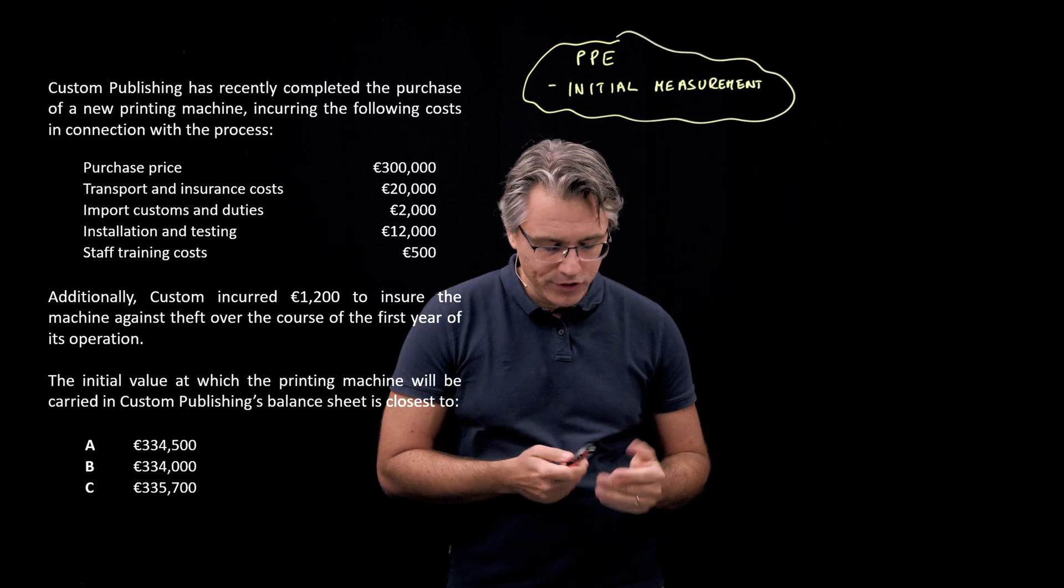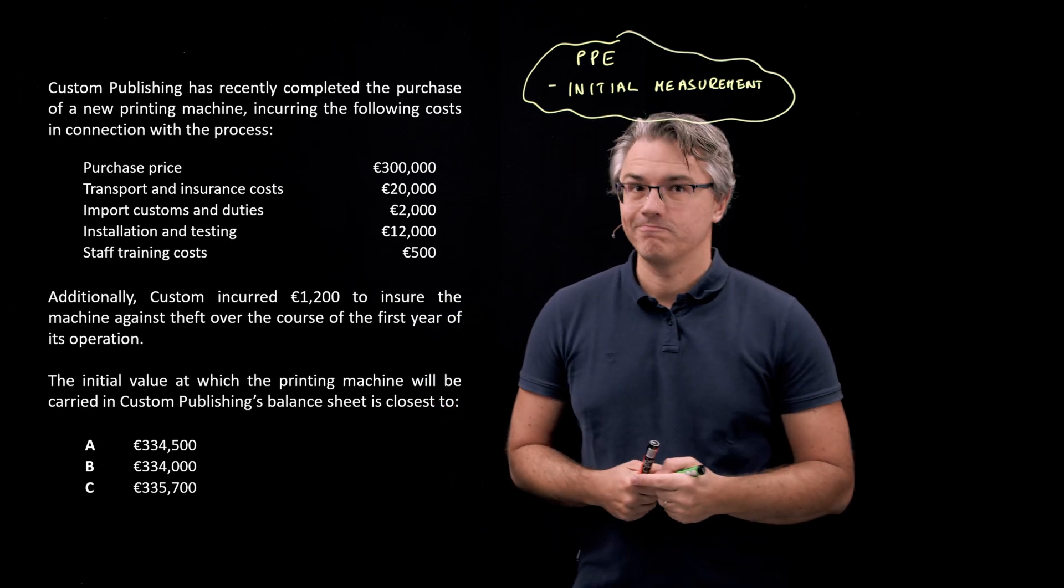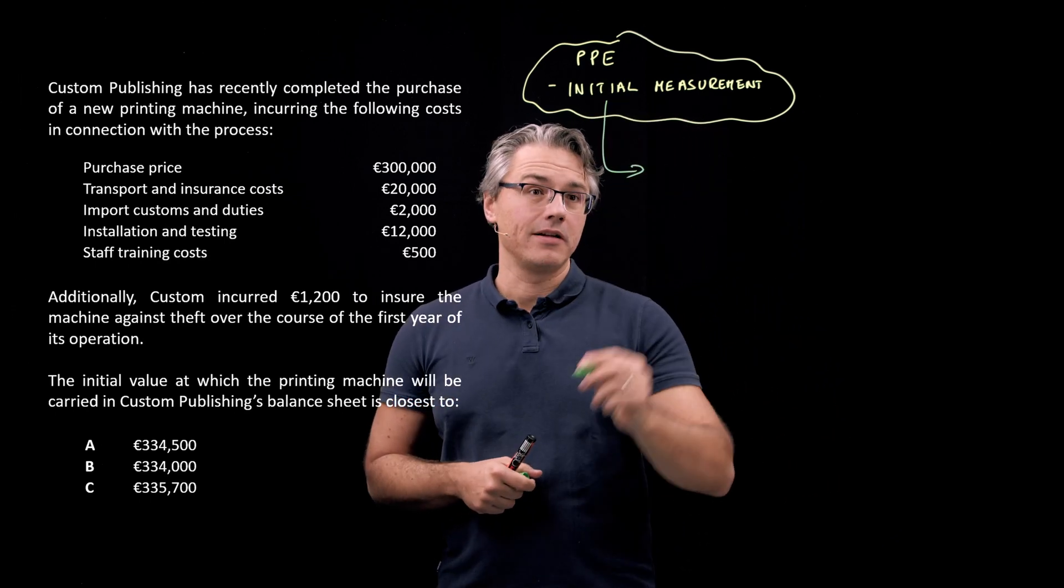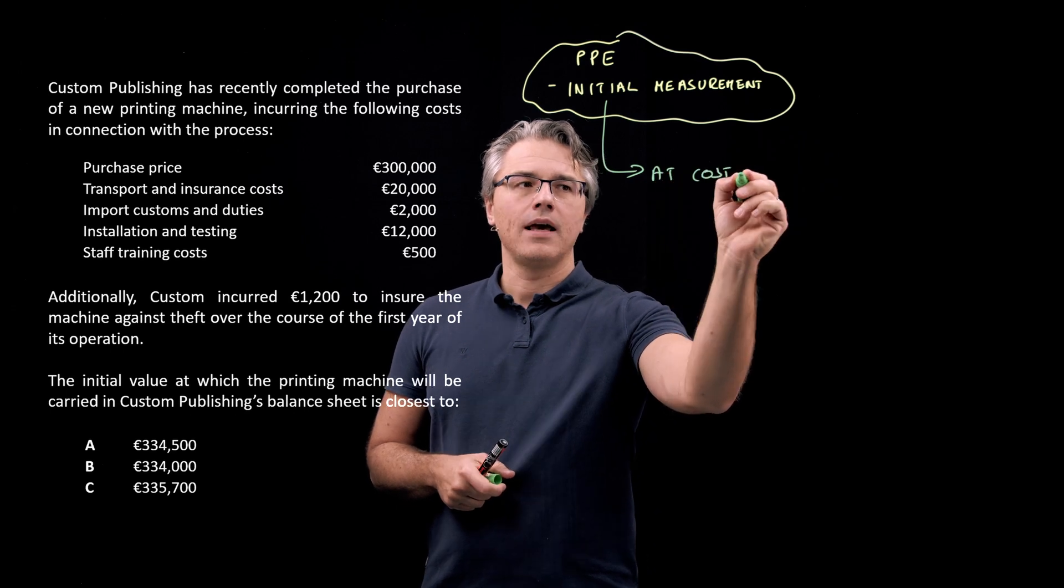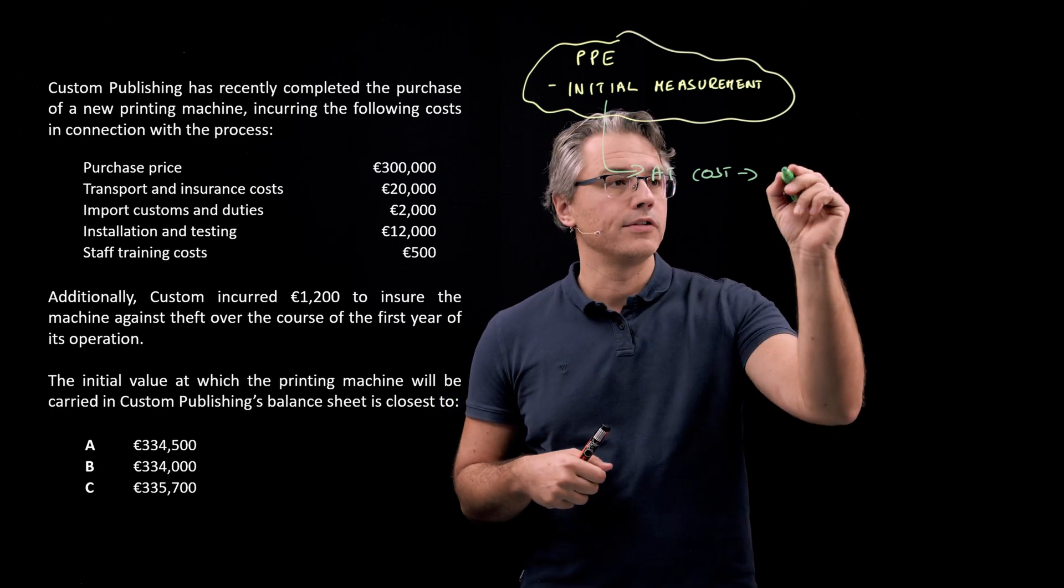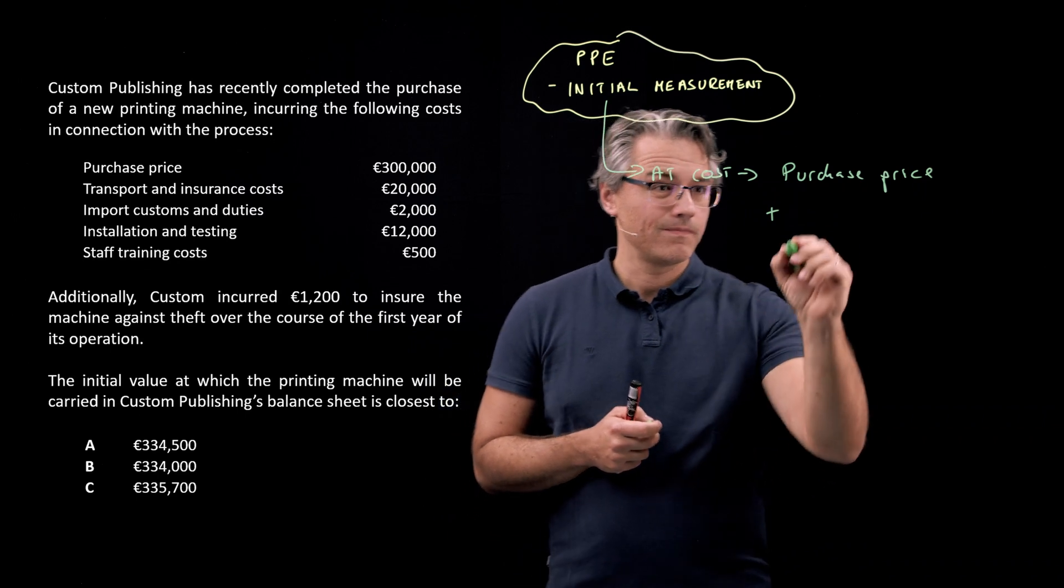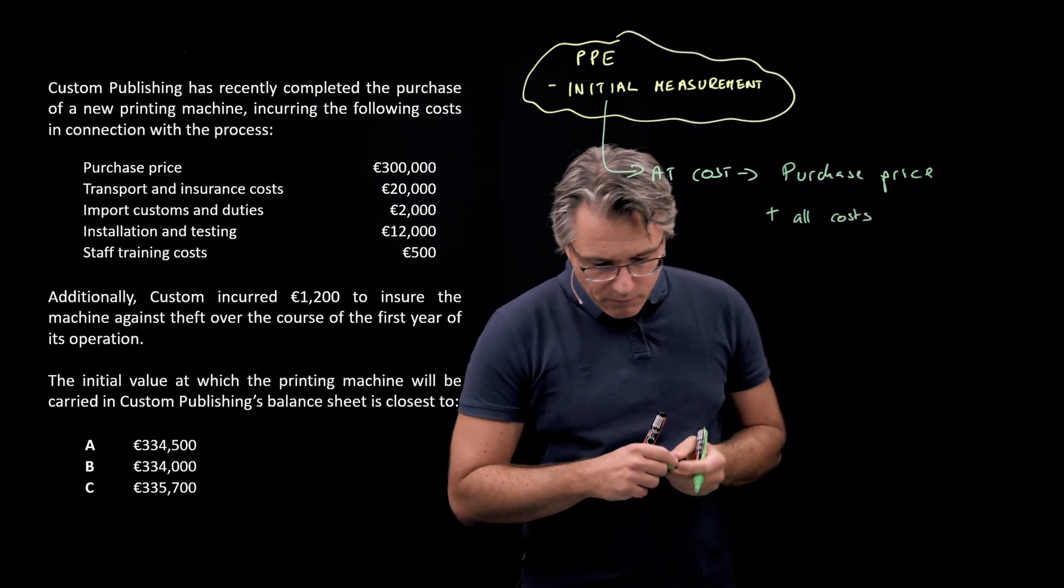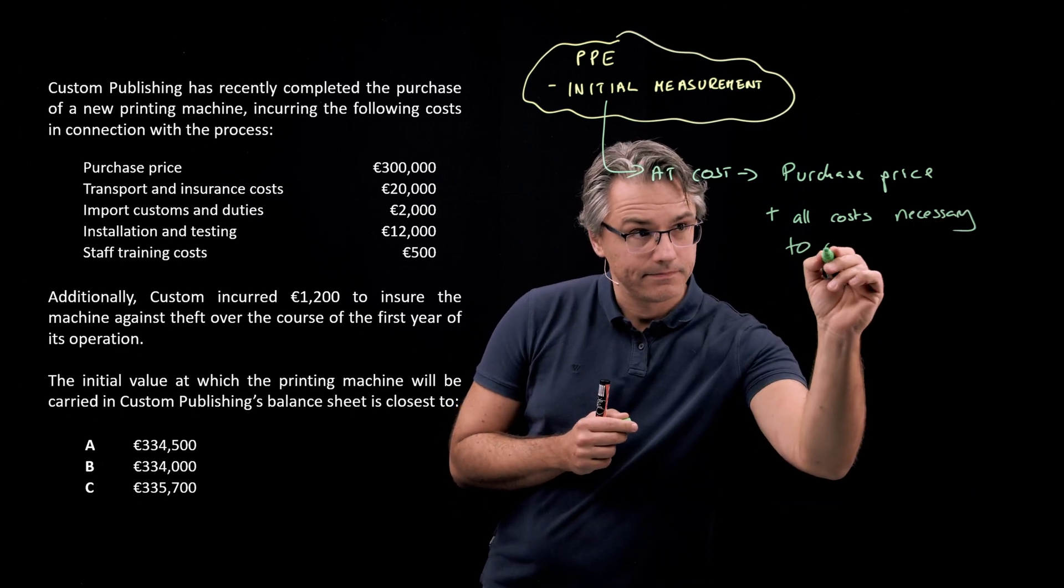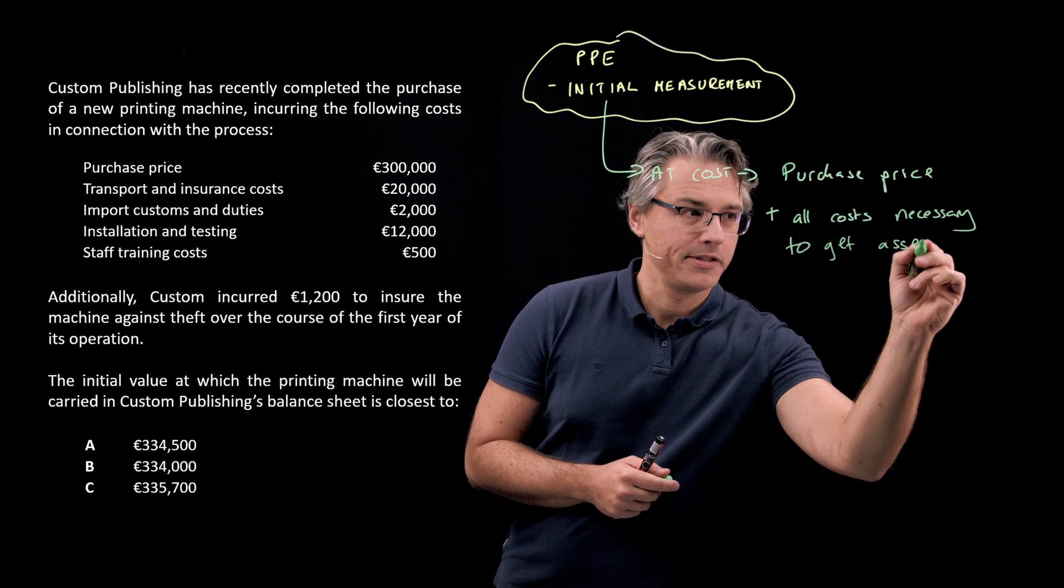Okay, what's the general rule for initial measurement? Just like with other items in the balance sheet, initial measurement is typically done at cost. And in the case of property, plant and equipment, that cost is going to include the purchase price, plus all costs which are necessary to get the asset, it doesn't have to be a machine, it could be any item of property, plant and equipment.